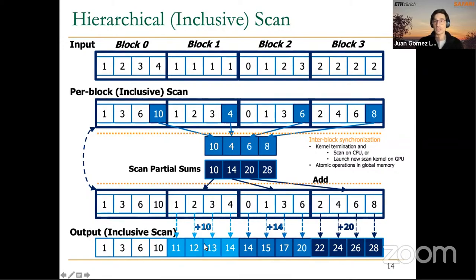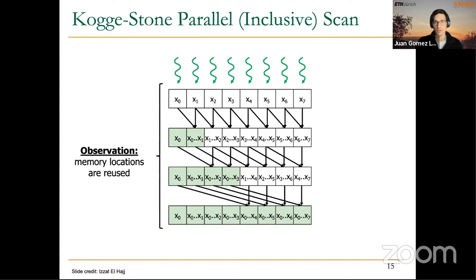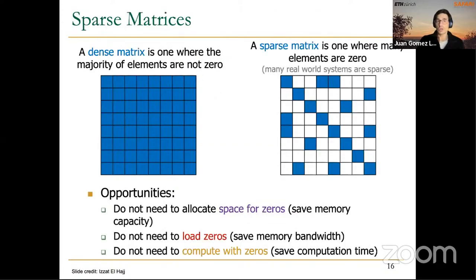For each of the scan stages, we presented a couple of basic algorithms. One of them, probably the most widely used in GPUs today, is the Kogge-Stone parallel algorithm. Last week, we talked about sparse matrices and computation using sparse matrices.